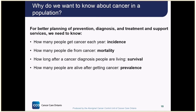There are four main measures that we use to look at cancer in populations: incidence, or how many people get cancer each year; mortality, or how many people die from cancer; survival, how long after cancer diagnosis people are living; and prevalence, how many people are alive after getting cancer.